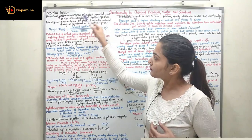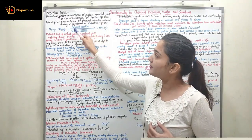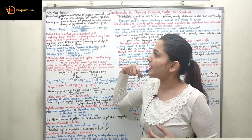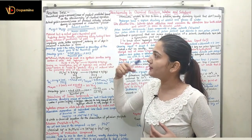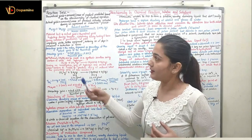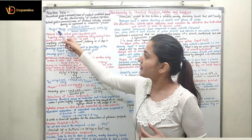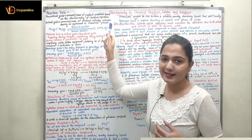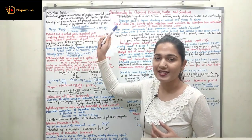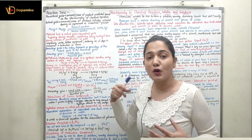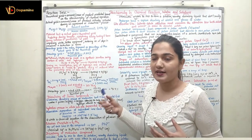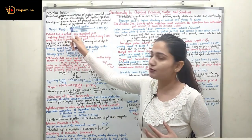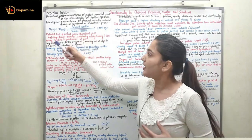In this reaction we have the actual yield and the theoretical yield. The theoretical yield can be calculated by looking at the equation, and the actual yield by seeing what amount of NH3 is produced when N2 and H2 are combined.